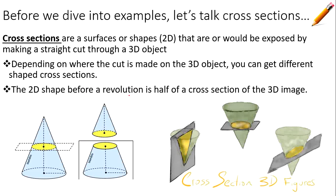Another thing to write down before we look at examples: cross sections. Cross sections are the surfaces or shapes—which are 2D—that would be exposed by making a straight cut through a 3D object. Depending on where you make the cut—horizontally, vertically, or at a slant—you can get different 2D cross sections. A 2D shape before revolution is only half of the cross section of that 3D shape.